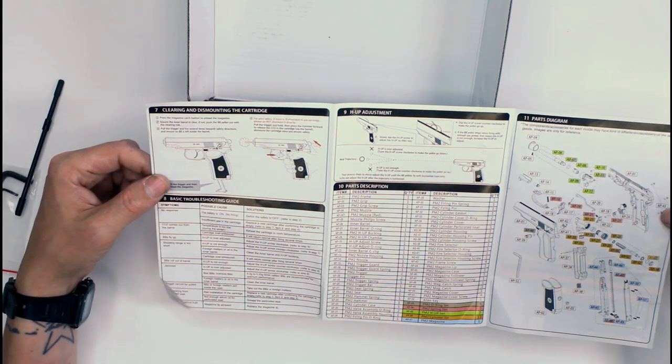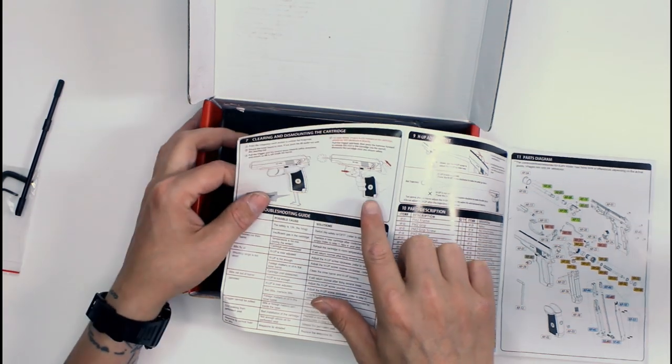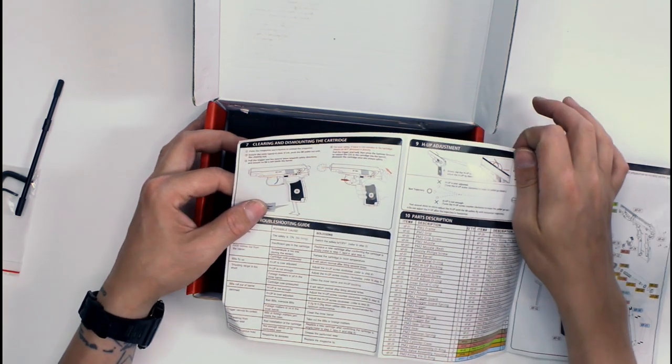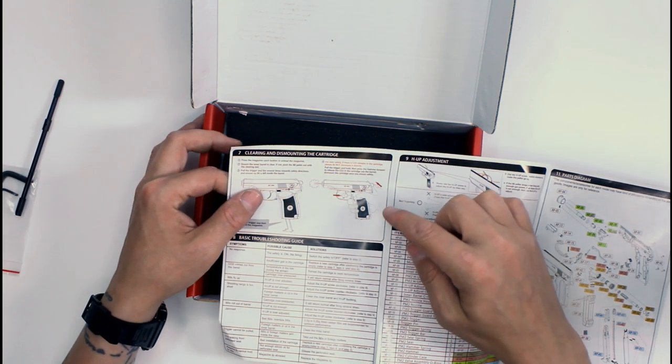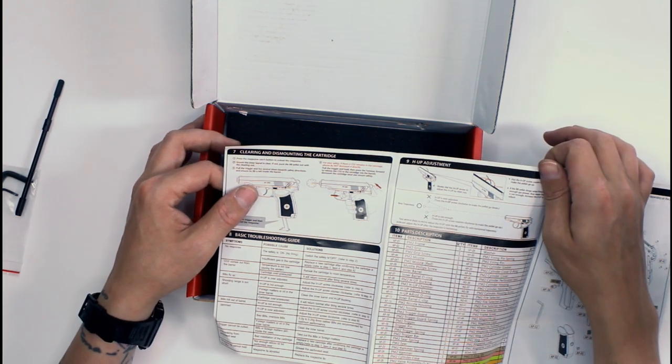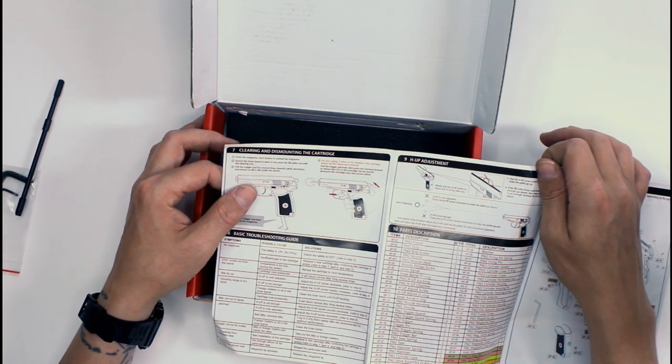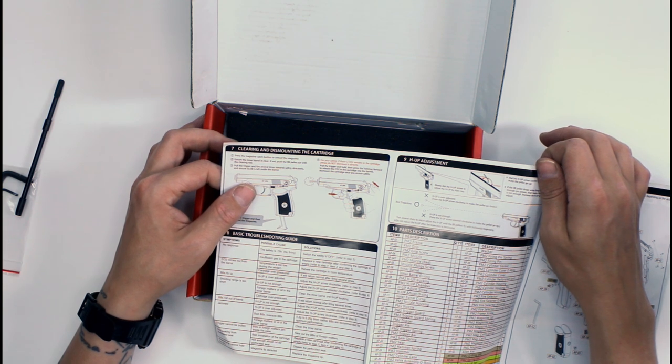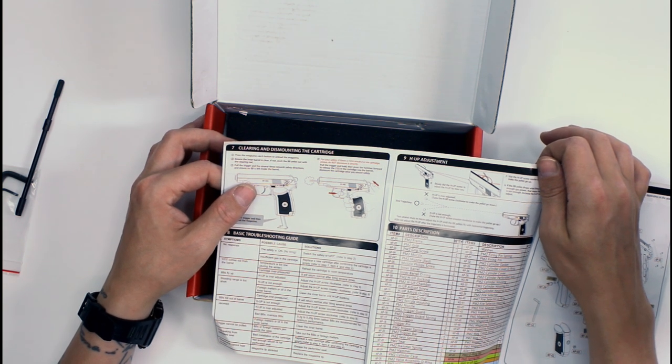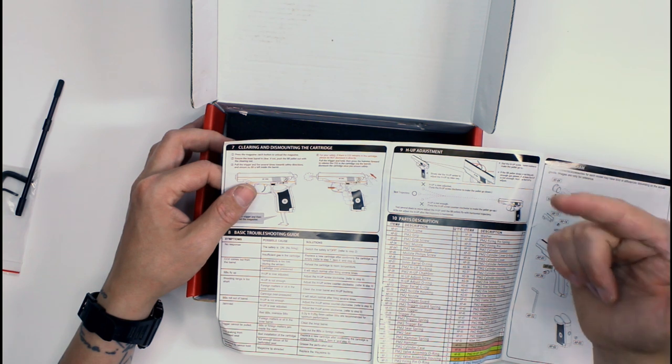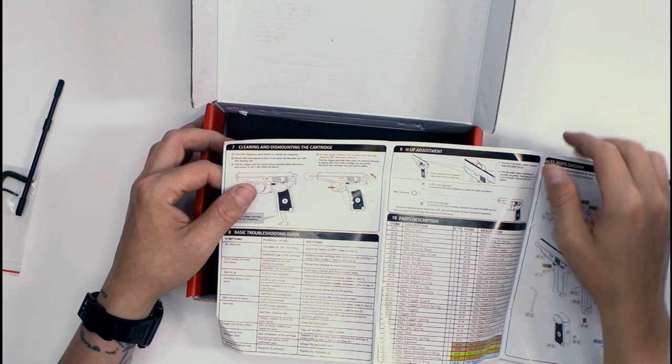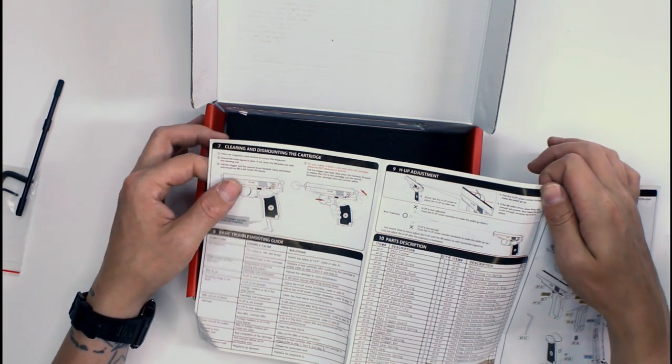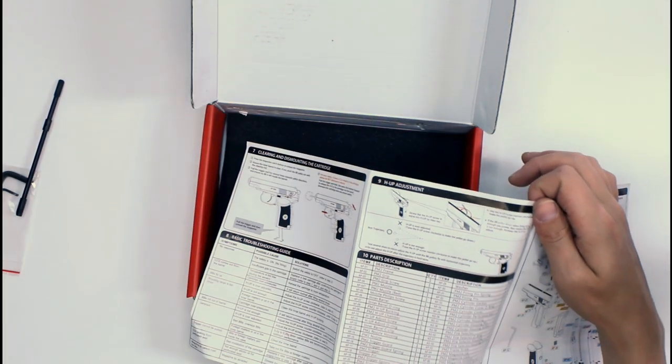And it also has the for your safety: if there is CO2 remains in the cartridge, please do not dismount it directly. What this means is if you still have CO2 in your cartridge, don't just undo it because it will squirt at everyone in the eye. So what you are supposed to do is pull the trigger and hold it, and then push the hammer forwards, and this will vent the entire CO2 from the cartridge, leaving it safe and sound for you to open up.